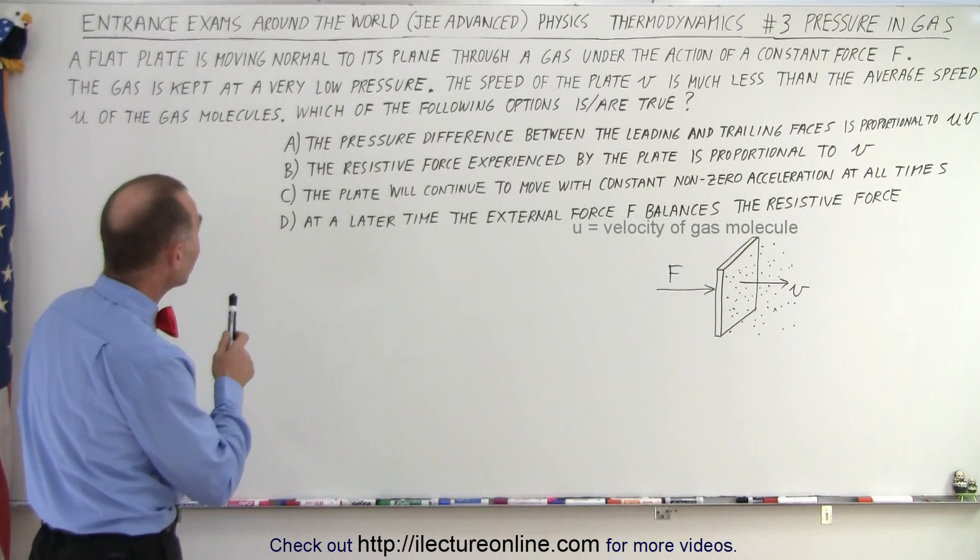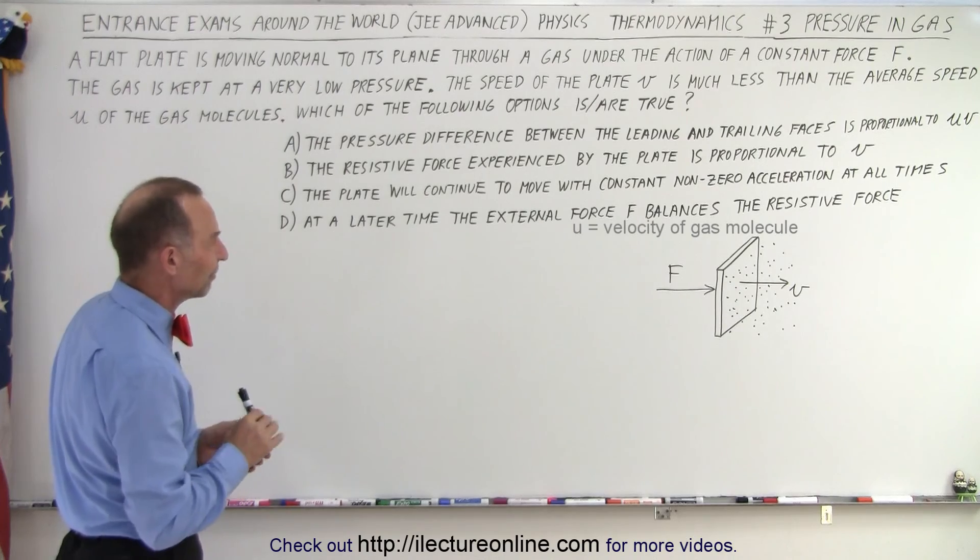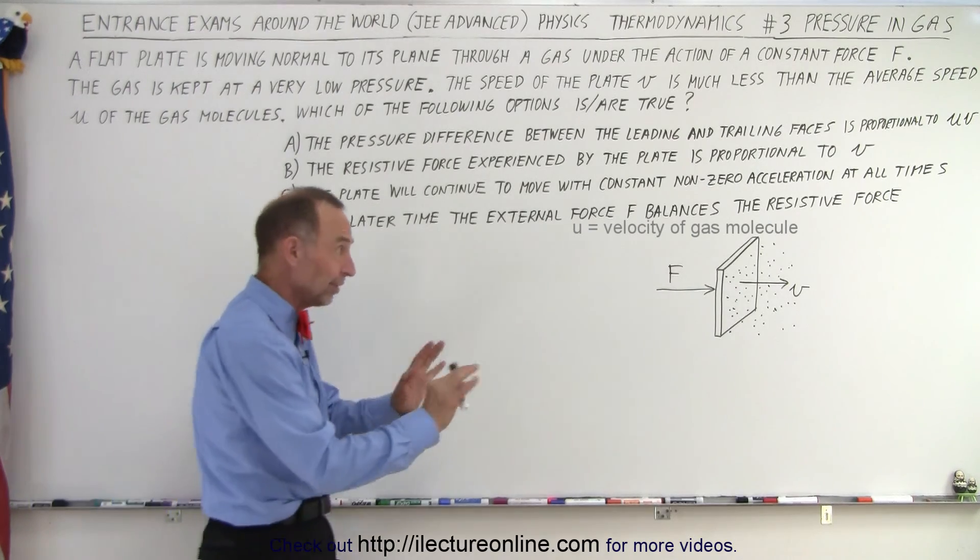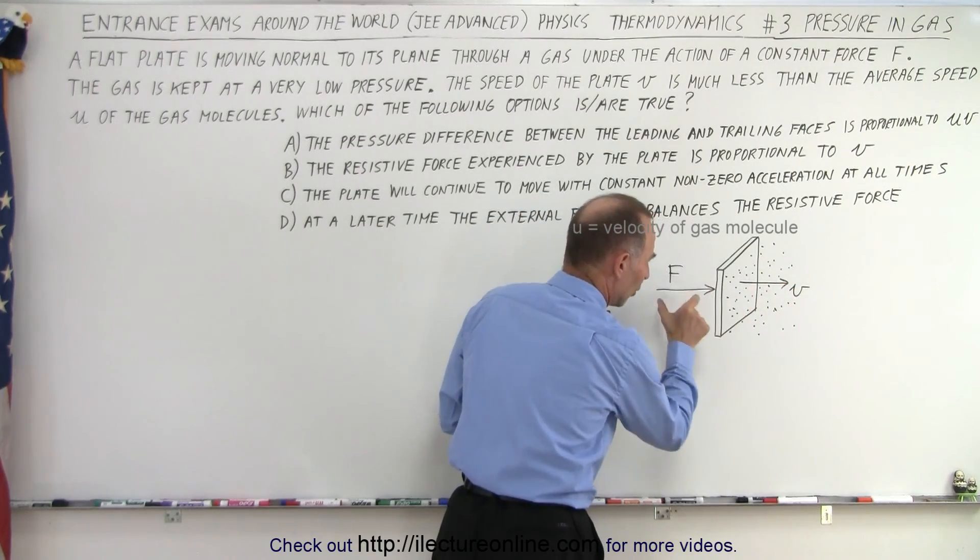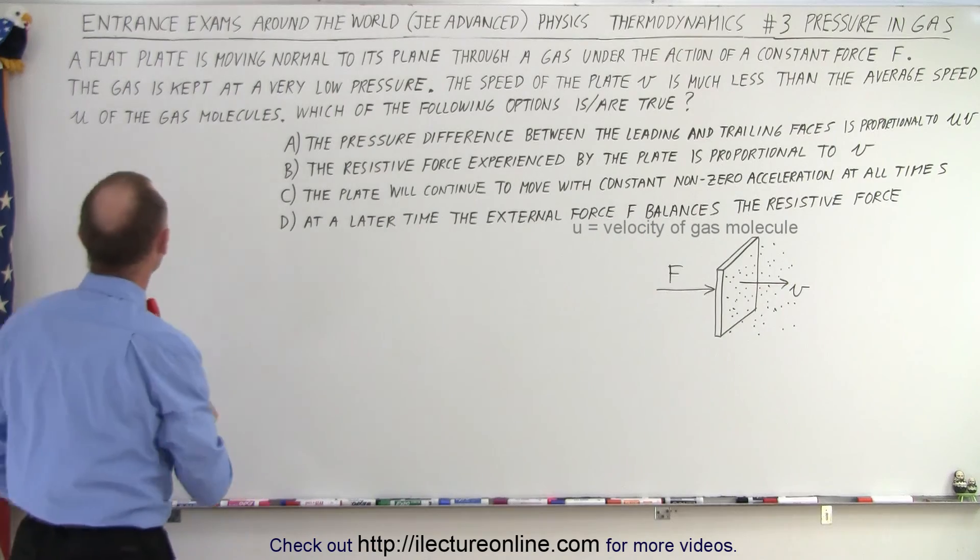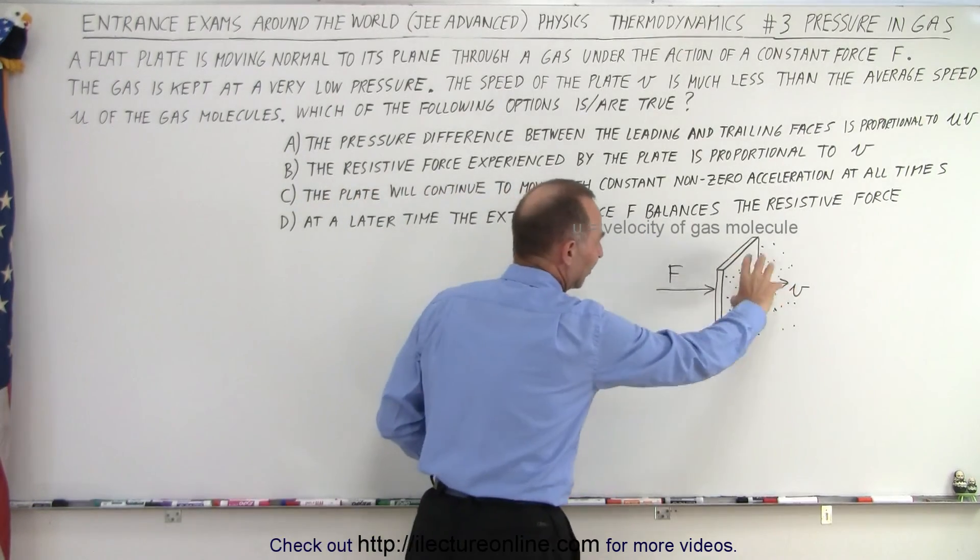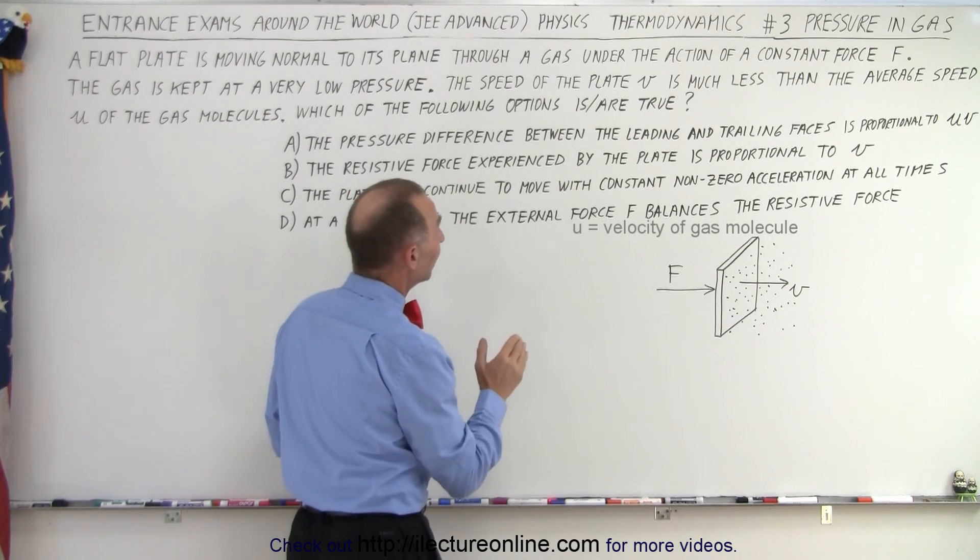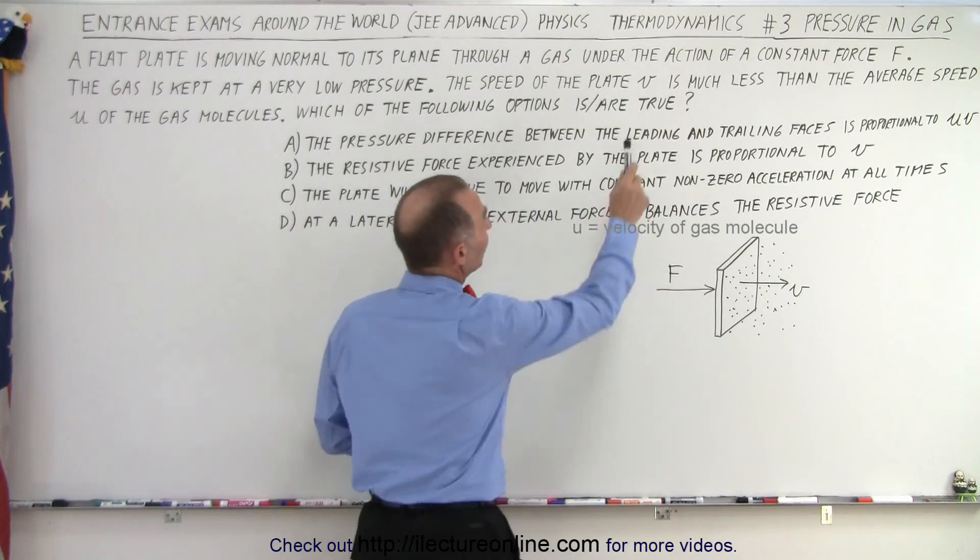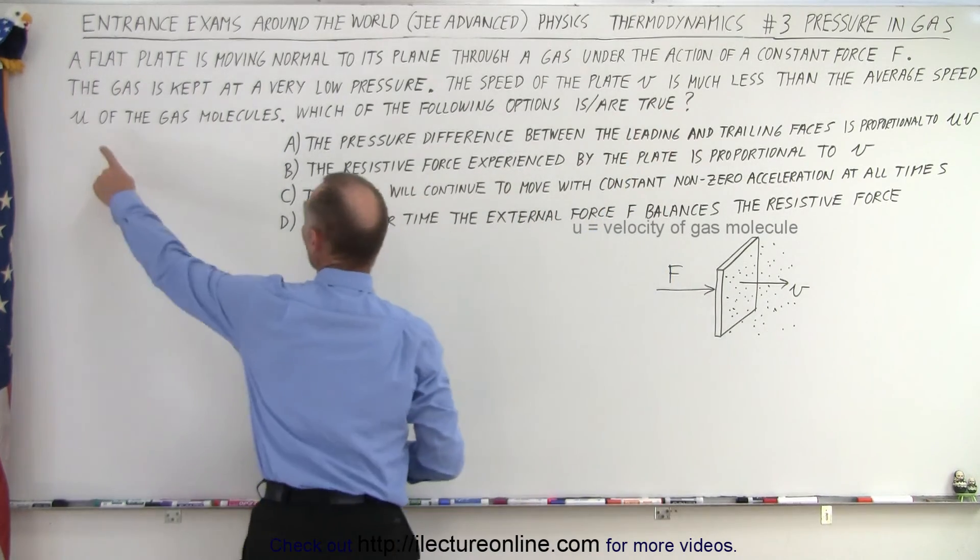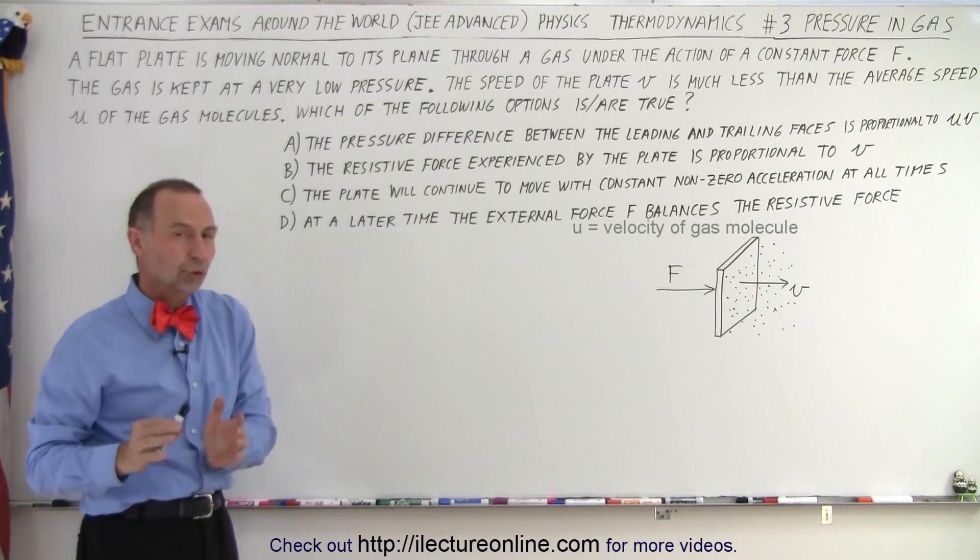A flat plate is moving normal to its plane through a gas under the action of a constant force F. I drew a little picture here even though the test didn't come with the picture, but you can imagine some plate moving through a gas with a force applied to it. The force is constant, the gas is kept at very low pressure. The speed of the plate is much less than the average speed of the gas molecules. We use V for the speed of the plate and U for the speed of the molecules. Which of the following options are true?